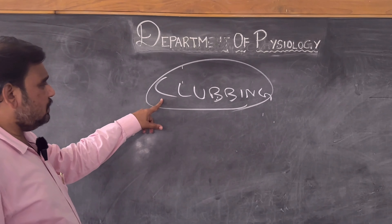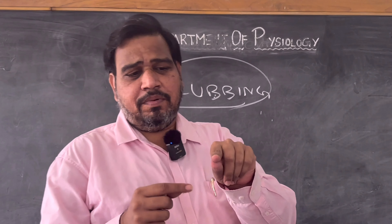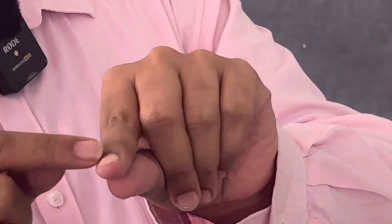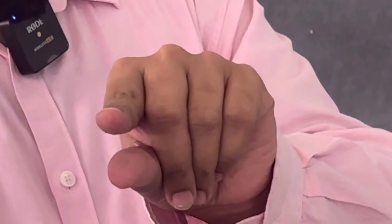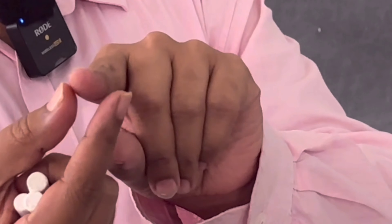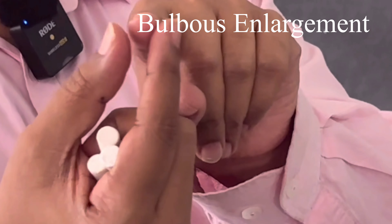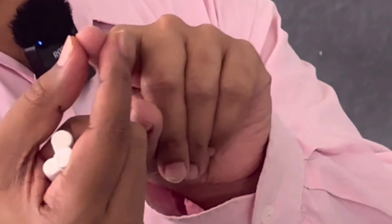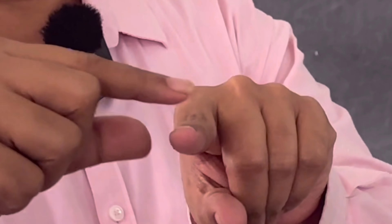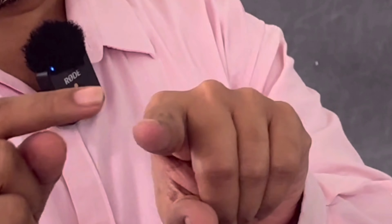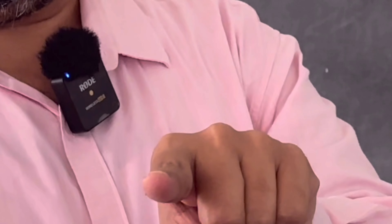So what is clubbing? It is usually bulbous enlargement. If you see here, this is the triangle between the nail and nail bed. So clubbing is nothing but bulbous enlargement of soft tissue of the phalanges — the terminal part. Clubbing is bulbous enlargement of the terminal part of the phalanges, or terminal phalanges.